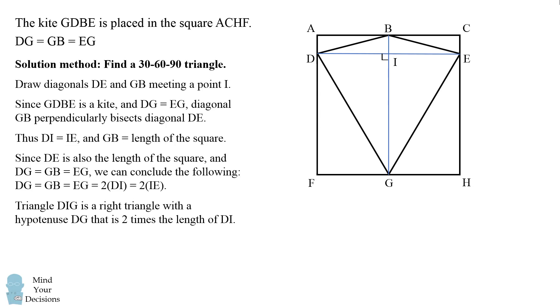Now we have a right triangle DIG whose hypotenuse DG has twice the length of one of its legs DI. If you have a right triangle where its hypotenuse is two times the length of one of its legs, that means it's a 30-60-90 right triangle, and the angle that's opposite the side of DI will be equal to 30 degrees.